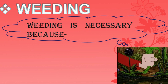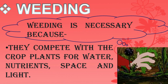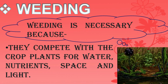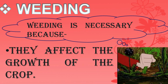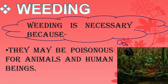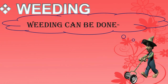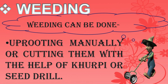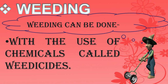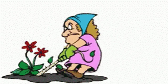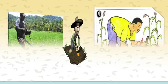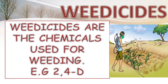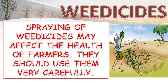Weeding is necessary because weeds compete with crop plants for water, nutrients, space and light. They affect the growth of the crop. They may be poisonous for animals and human beings. Weeding can be done at the time of tilling before sowing of seeds, by rooting out manually or cutting them with the help of a khurpi or seed drill, or by using chemicals called weedicides. Weedicides are chemicals used for weeding. Spraying of weedicides may affect the health of farmers, so they should use them very carefully.